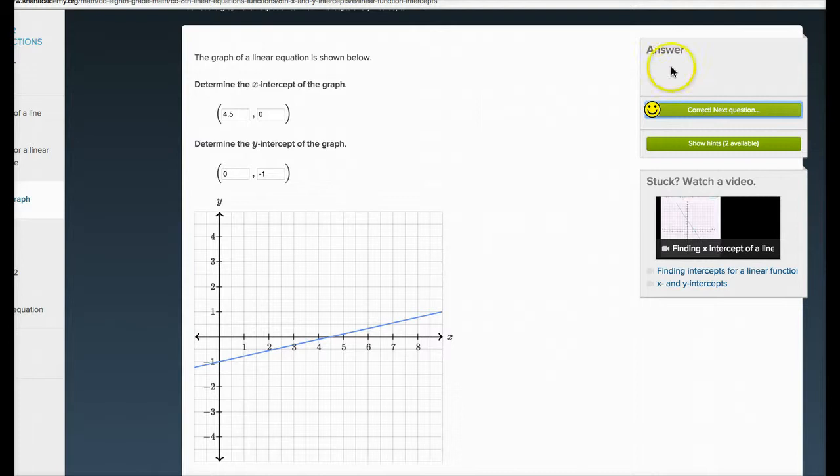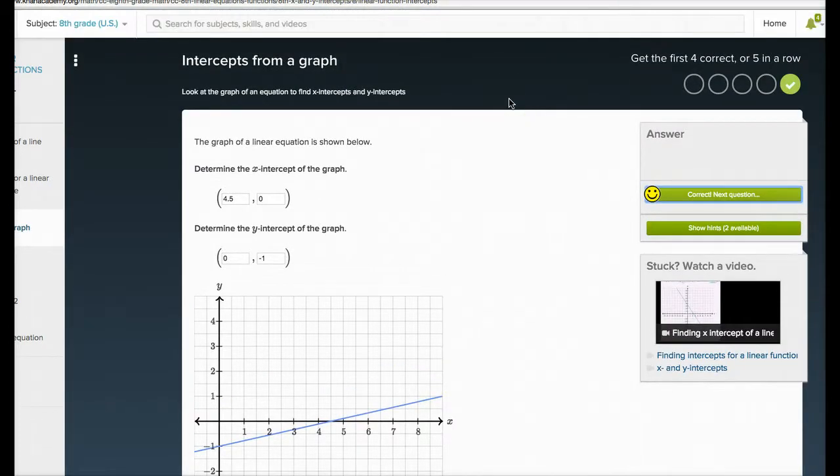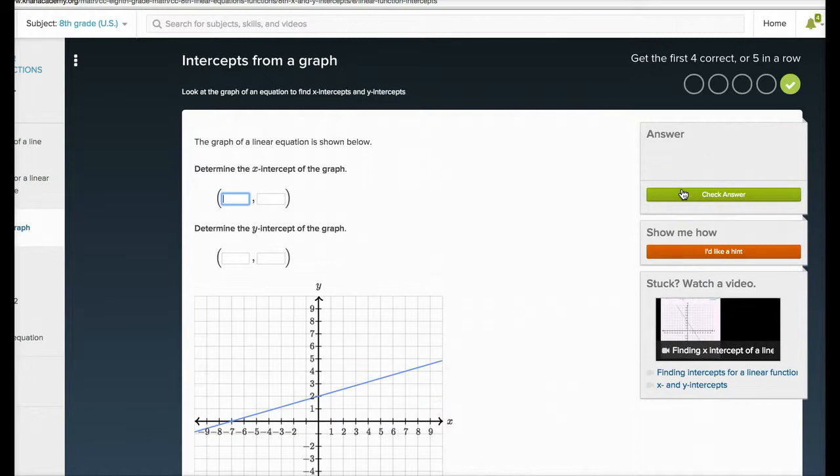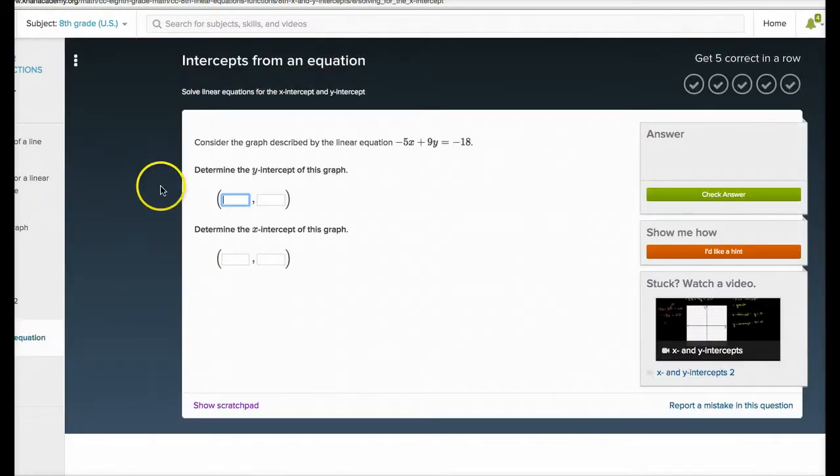The thing that you have to get before we go into the next section is that the intercept itself is just, you're basically setting one of the two variables to zero, and then you're solving. So, when you get to this type of question, intercepts from an equation, you're going to do the sort of algebraic version of that.